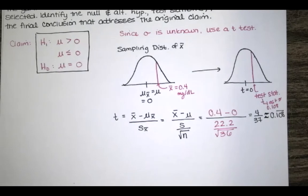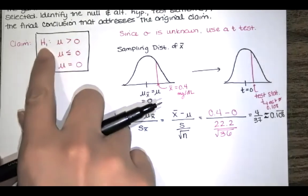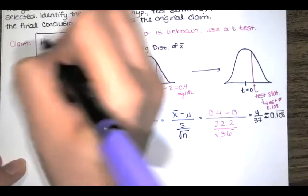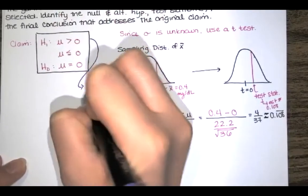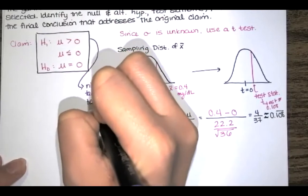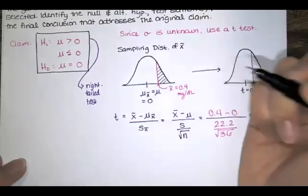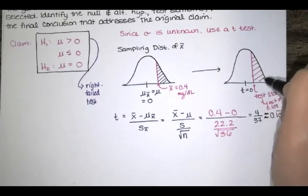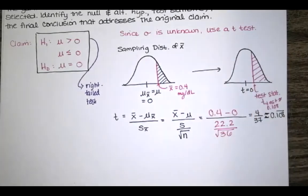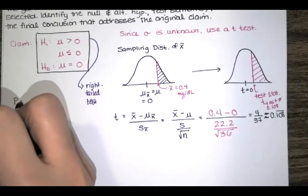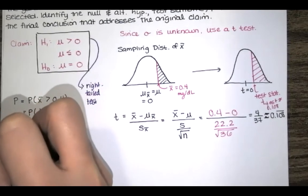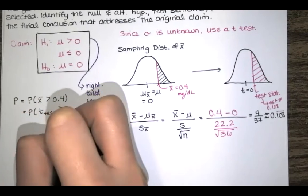Finding the p-value requires determining whether the test is one-tailed or two-tailed. Our alternative hypothesis states the mean is greater than zero — we can think of this as an arrow pointing to the right, so this is a right-tailed test. We're interested in the area to the right of the test statistic on the Student t distribution. So p equals the probability that t is greater than approximately 0.11.